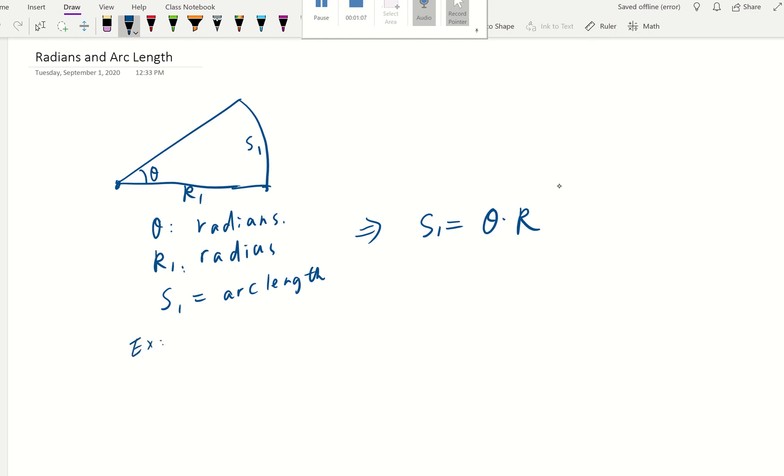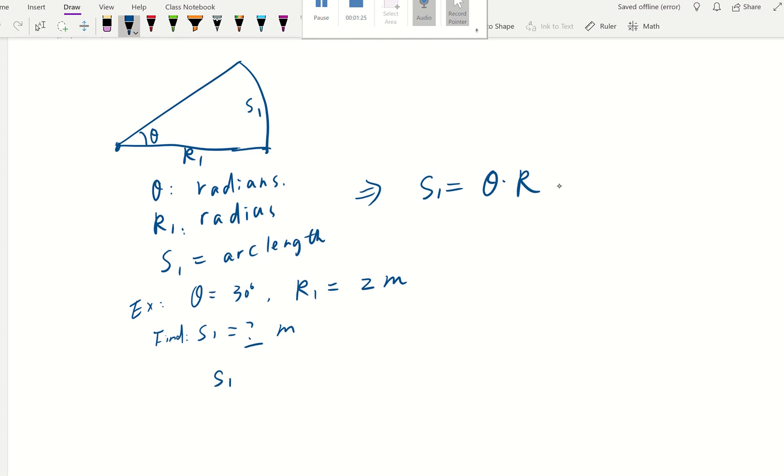Let's do a quick example. If my theta here is 30 degrees and the radius is 2 meters, and we want to find the arc length s1 in units of meters, how do we work on that? Really straightforward.